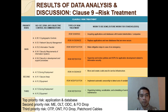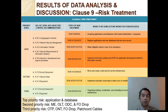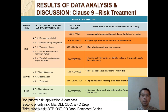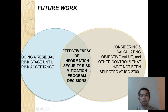The top priority risk is application and database. The second priority risks include MA, OLT, ODC, and FWDROP, relevant to this particular telecommunication company that delivers services through customers. The third priority risks include OTP, ONT, and FWDROP.